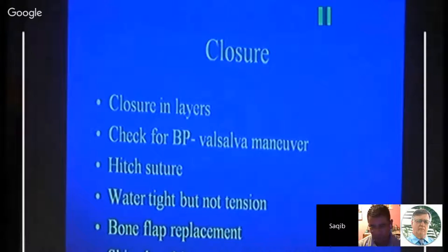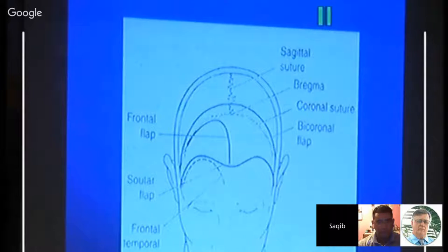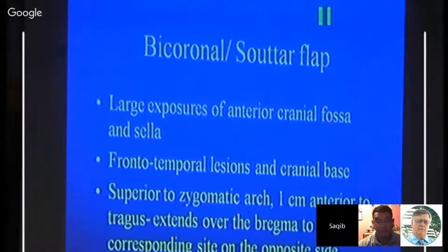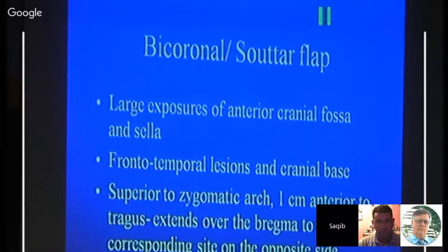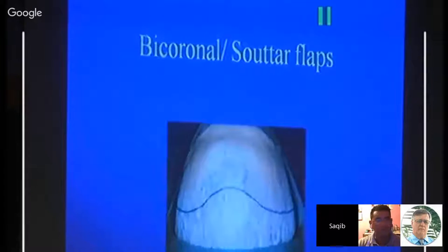Apply hitch or tenting stitches in the center. Dura should be watertight but not under tension — if too tight, consider applying a graft. The bone flap is replaced and skin is closed in two layers. Different flaps that can be raised include the bicoronal flap, frontal temporal flap, and the coronal flap. For the bicoronal flap — used for larger exposure of the anterior cranial fossa or sellar-frontal-temporal lesions — the incision begins about one centimeter above the tragus, extends to the brachma and across to the opposite side, and is reflected up to the orbital rim, giving excellent exposure of the frontal area. It is based on the supra-orbital and supra-trochlear vessels.